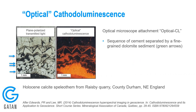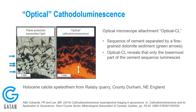Here we have an example of a transmitted polarized light image and the optical CL image from calcite. We can see a sequence of calcite cements separated by fine-grained dolomite sediment. In the optical CL image, the lower part of the cement sequence emits luminescence very strongly with an orangey-red colour, whereas the upper part of the calcite emits bright orange and the calcite in the upper part hardly emits anything at all. The layers of dolomite also luminesce in a slightly different orangey-red colour.